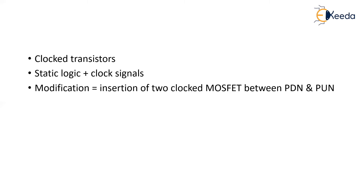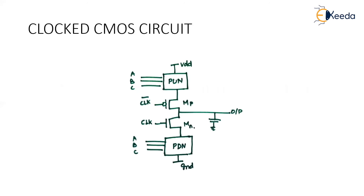What is the modification we are giving to the static logic? We are going to keep two clocked MOSFETs between your pull-up network and your pull-down network. If we have only a pull-up network and pull-down network, that is normal CMOS logic, whereas here we will be keeping two clocked MOSFETs between the pull-up network and pull-down network. See the circuit of your clocked CMOS — there are two clocked MOSFETs between your pull-up network and your pull-down network.